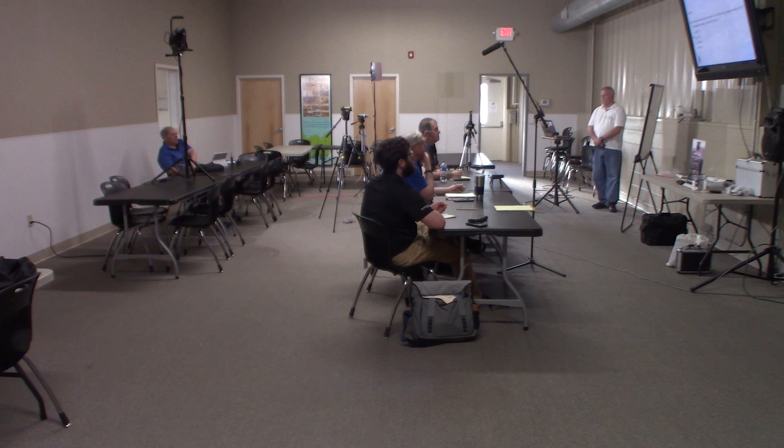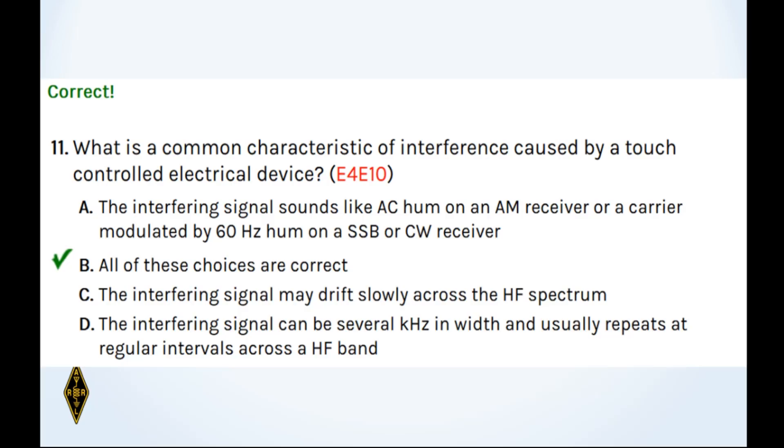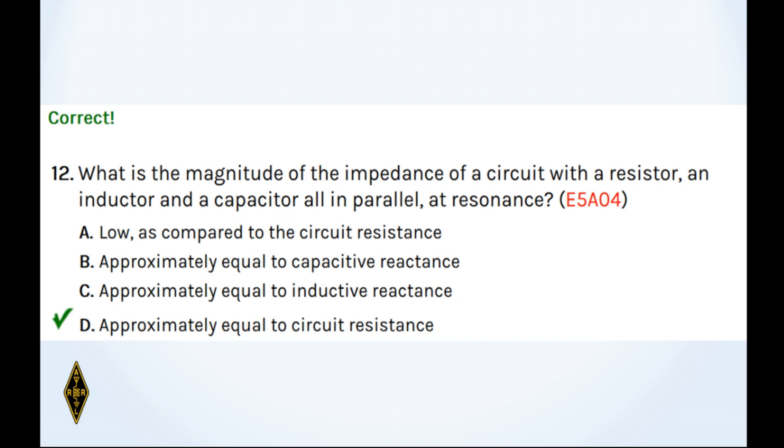And what is a common characteristic of interference caused by a touch-controlled electrical device that is from the devil? All of those. Every single one of them. Touch lights, as Tom would say, bad juju. And 12. What is the magnitude of the impedance of a circuit with a resistor, an inductor, and a capacitor all in parallel, and the key is at resonance. At resonance, the capacitor and inductor cancel each other, and you're left with just the circuit resistance. So 12D.